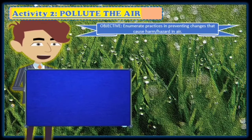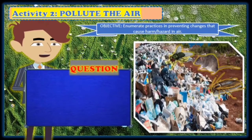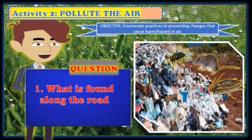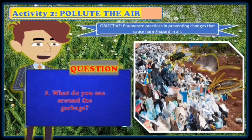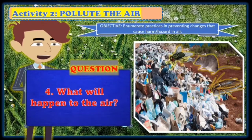Activity two is 'Pollute the Air.' The objective is to enumerate practices in preventing changes that cause harm or hazard in air. Observe the picture and answer the following questions: What is found along the road? What do you see around the garbage? What do you think is the smell of the air when you pass by that place? Why? And what will happen to the air?